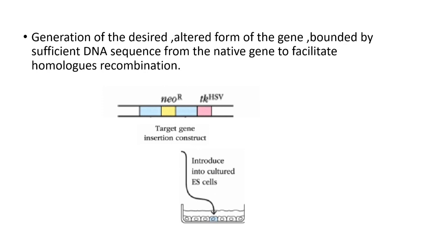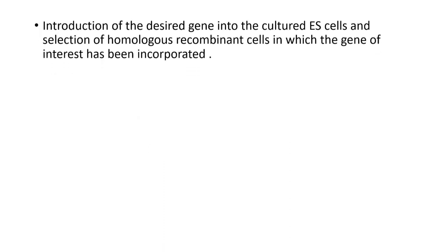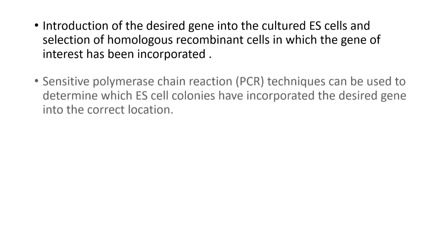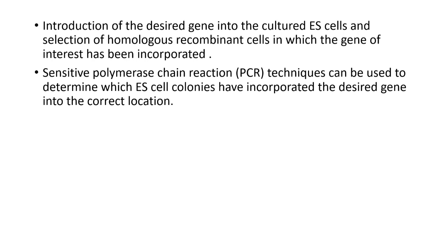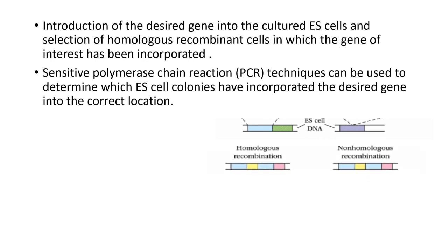This construct is transferred to cultured embryonic stem cells. Recombination occurs in only about 1% of cells, and non-homologous recombination is much more frequent than homologous recombination. We use sensitive PCR techniques to determine which embryonic stem cell colonies have incorporated the desired gene into the correct location. Here, the embryonic stem cell DNA can undergo either homologous or non-homologous recombination.